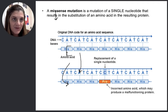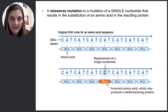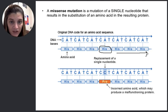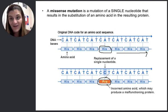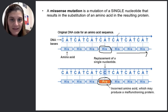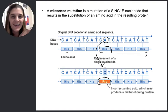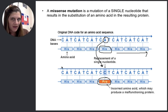This next one is called a missense mutation, and it occurs whenever we make a single mistake. Take a look at what's going on: we've got repeating DNA — cat, cat, cat, cat — and ultimately that codes for the amino acid histidine, so we've got a bunch of histidines linked together. Now if we change the A to a C, we've messed up, and instead of a histidine we now have a proline. That's the wrong amino acid — that's what we call a missense. So this was a point mutation because we only changed one nucleotide, it was a substitution, and it resulted in a missense mutation. There's a lot of overlapping definitions.